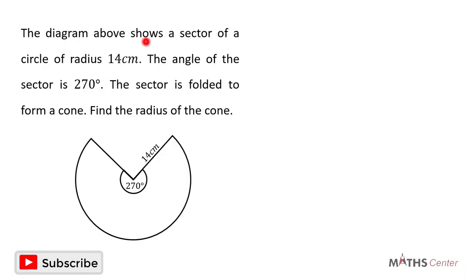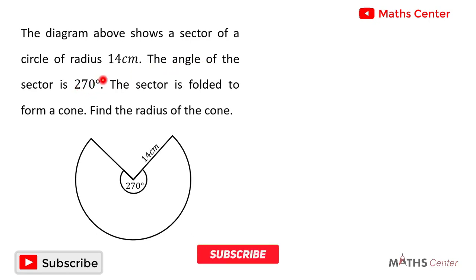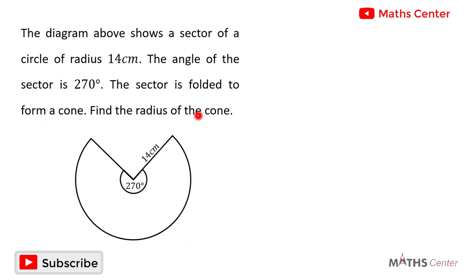The diagram below shows a sector of a circle of radius 14 centimeters. The angle of the sector is 270 degrees. The sector is folded to form a cone. Find the radius of the cone. So this sector is cut off from a circle and is folded to form a cone. The question wants us to find the radius of the cone.